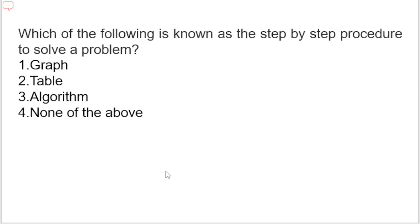The last question: which of the following is known as a step-by-step procedure to solve a problem? Options are: graph, table, algorithm, or none of the above. The correct answer is algorithm. A finite set of instructions that specifies a sequence of operations to be carried out to solve a specific problem or class of problems is called an algorithm.